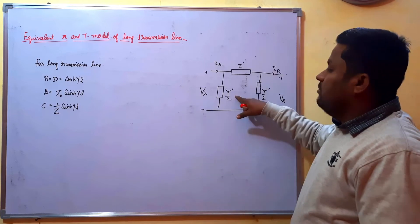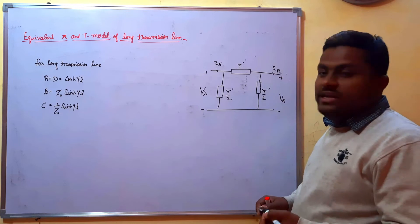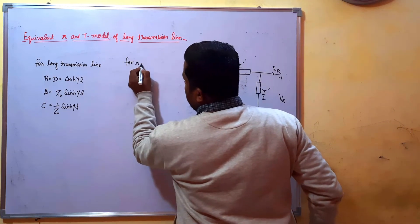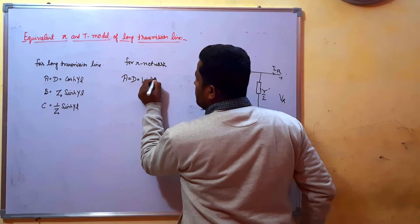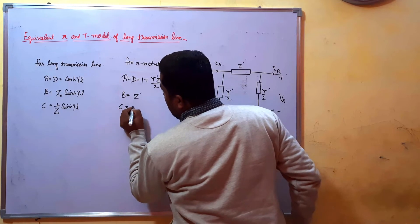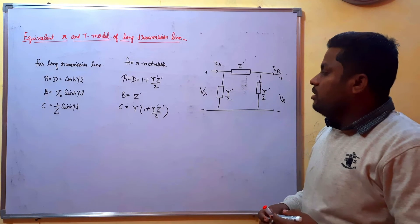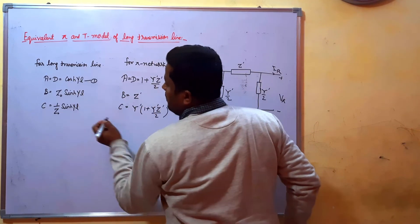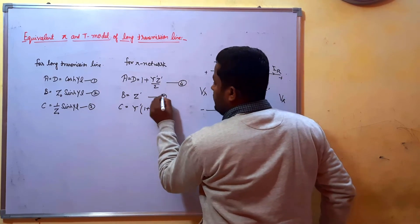Our aim is to find the value of Z' and Y' in terms of these parameters. For the pi network, the ABCD constants are: A is equal to D is equal to 1 plus Y'Z'/2 (equation 1), B is equal to Z' (equation 2), C is equal to Y'(1 plus Y'Z'/4) (equation 3). Suppose equation 1 is first, equation 2 is second, equation 3 is third, and so on up to equation 6.